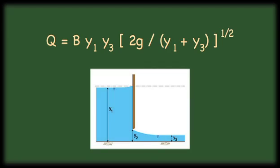In which q is the discharge, b is the width of the flume, y1 is the upstream flow depth, y3 is the downstream flow depth, and g is the gravitational acceleration.